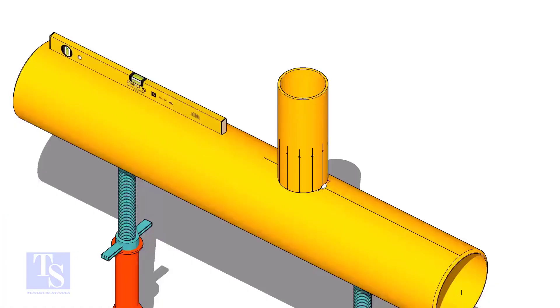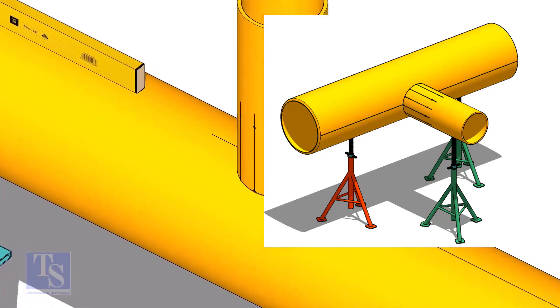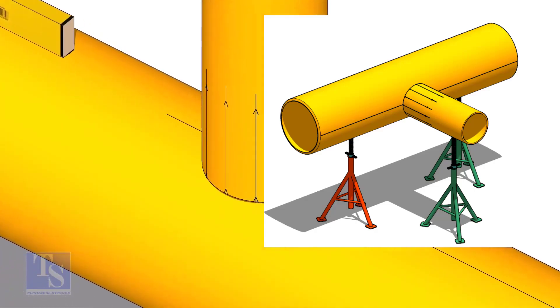Tack weld the branch on the header just to stand it vertically. If the pipes are large, you can do it in the horizontal position also.